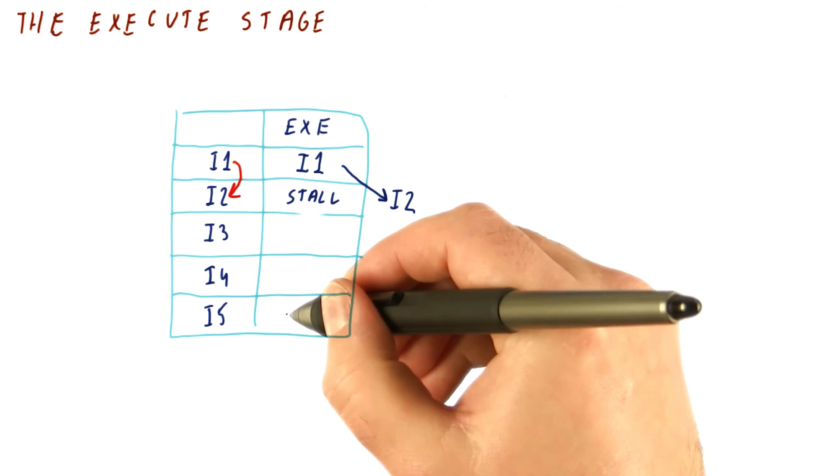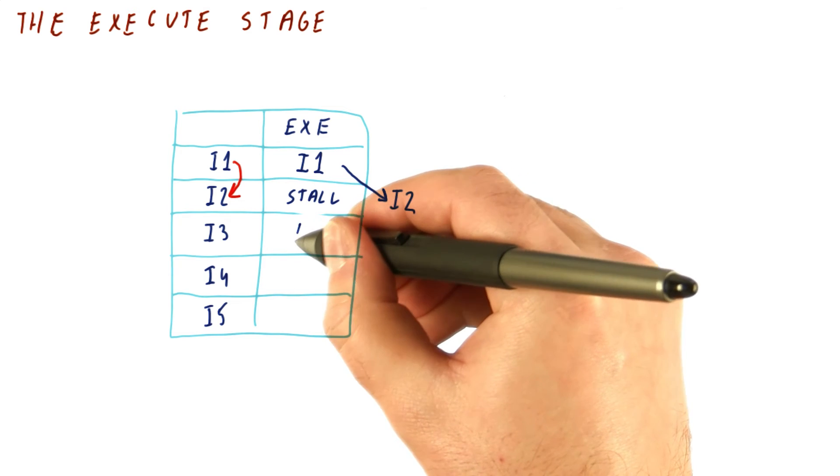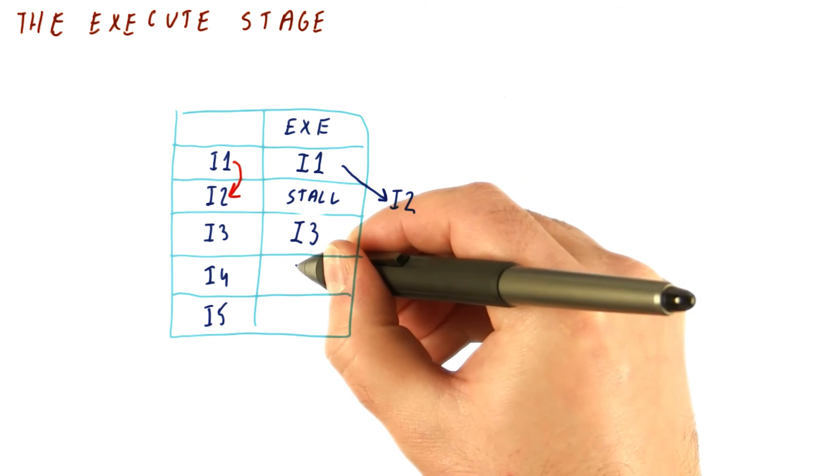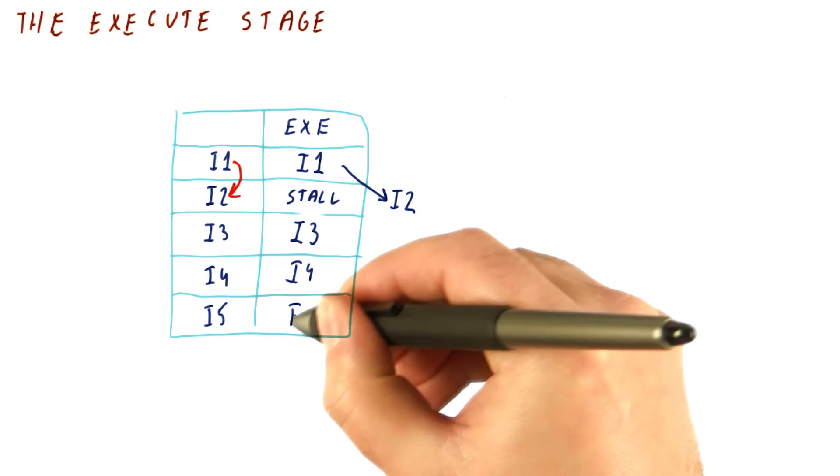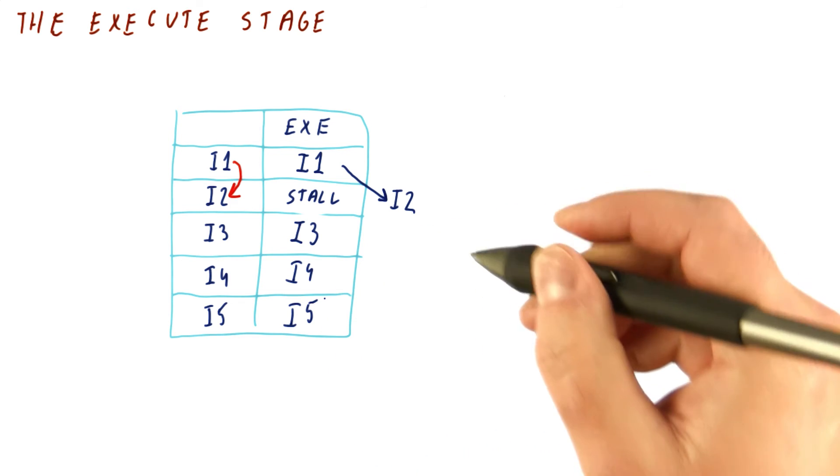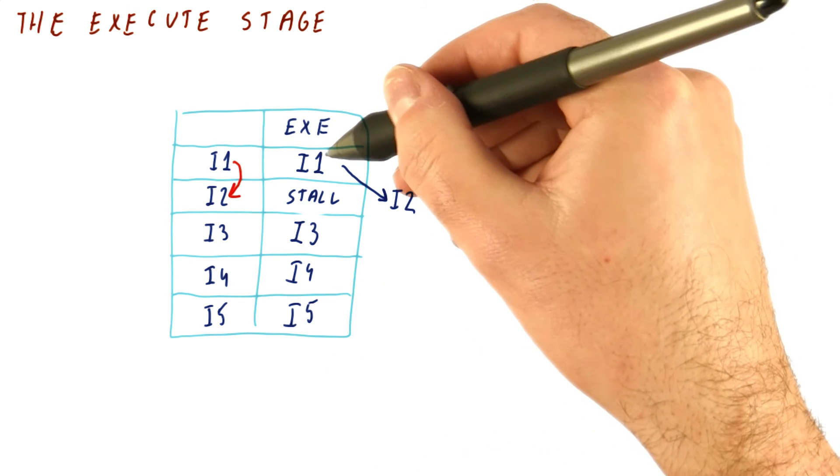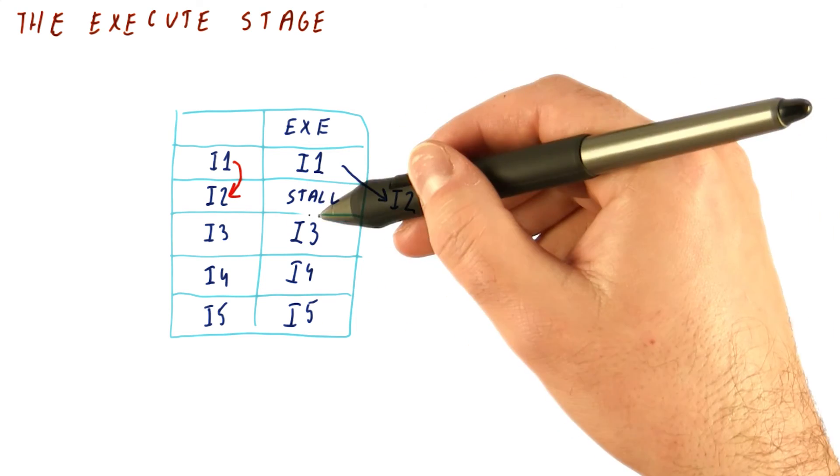If i3, i4, and i5 don't have any dependencies with i1, they can still execute. They have read the right register values, they're going to be able to execute. So now what we have is we spent two cycles executing five instructions.